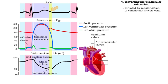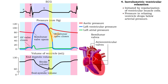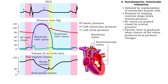Repolarization of the ventricular muscle cells initiates isovolumetric relaxation. As the ventricles relax, pressure in the ventricles drops, the semilunar valves close, preventing backflow. The closure produces a dicrotic wave on the aortic pressure curve.